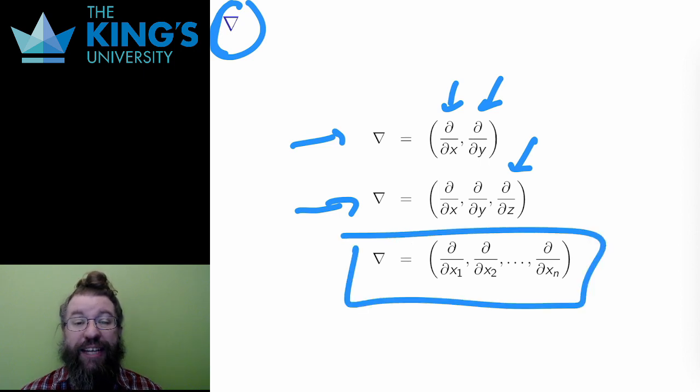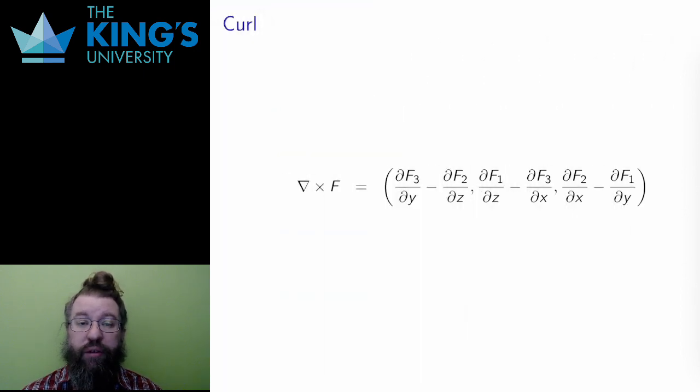However, for this entire section on vector fields, most of what I will be doing is in R3, so I'll not worry too much about the generalization. The operator nabla is a vector. A vector formed of other operators, yet, but in form, a vector.